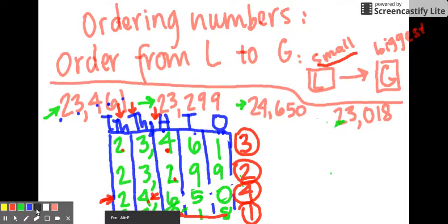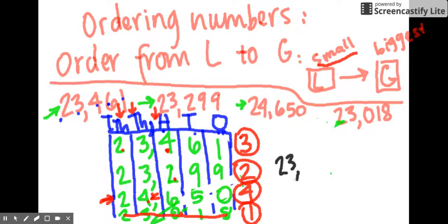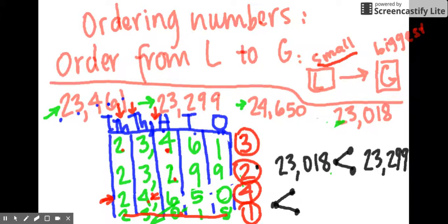If we were to write this out, it would be something like this. 23,018 is less than. Remember, when we do a less than sign, we put the 1 dot near the smaller number and then 2 dots near the bigger number, pointing towards the bigger number. It's smaller than 23,299. Now, if I had more room, I could keep going in one line, but I don't. So I'm going to put another less than sign because we've been looking for the smallest numbers in a row. 23,018, 23,299, and then 23,461. And last but not least, 24,650.